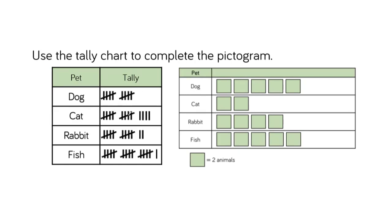Let's count our cats now. We have five, ten, eleven, twelve, thirteen, fourteen cats we need to show in our pictogram. How many do I have in the pictogram so far? Two, four. So count with me as I draw the rest: six, eight, ten, twelve, fourteen. Let's count again to double check: two, four, six, eight, ten, twelve, fourteen. And in the tally chart: five, ten, eleven, twelve, thirteen, fourteen. So we've finished that row.